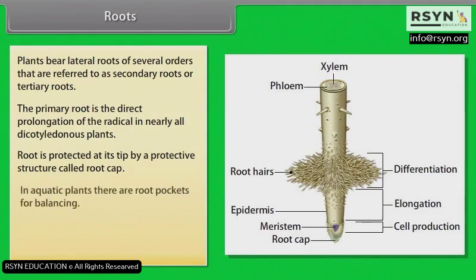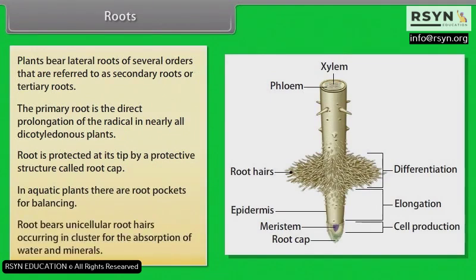Root is protected at its tip by a protective structure called root cap. In aquatic plants, there are root pockets for balancing. Root bears unicellular root hairs occurring in clusters for the absorption of water and minerals.